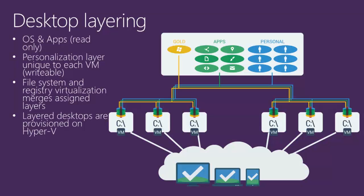Desktop layering. There are different layers for different components: there's an OS layer, an application layer. These layers are read-only, so the user can't change those. Then there is the user layer — this is writable per user, so they can make changes and customize. As the user requests their desktop, all those layers are brought together and presented to the user as a single desktop.